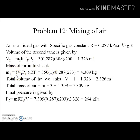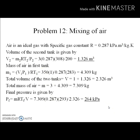Applying the ideal gas law to tank one: M1 = V1·P1 / (R·T1). Plugging in all the values gives M1 = 4.309 kg. The total mass of air is therefore 4.309 + 3 = 7.309 kg. The final temperature is 20 degrees centigrade, which is 293 K. Plugging everything into the ideal gas equation gives the final pressure as 264 kilopascals. This is a very straightforward problem using only the ideal gas equation.